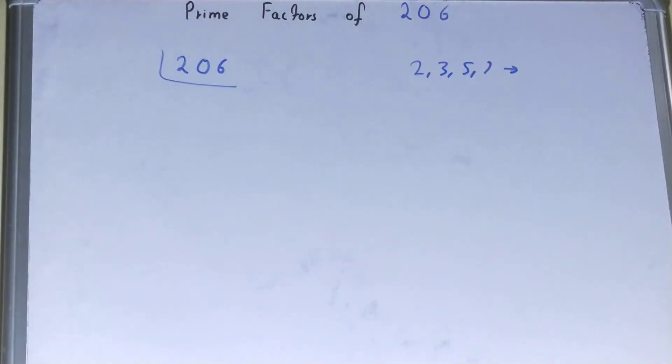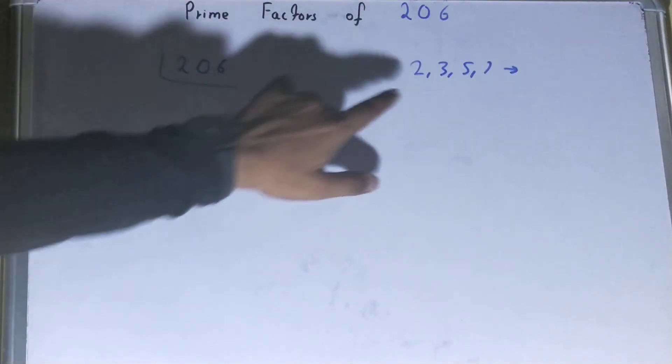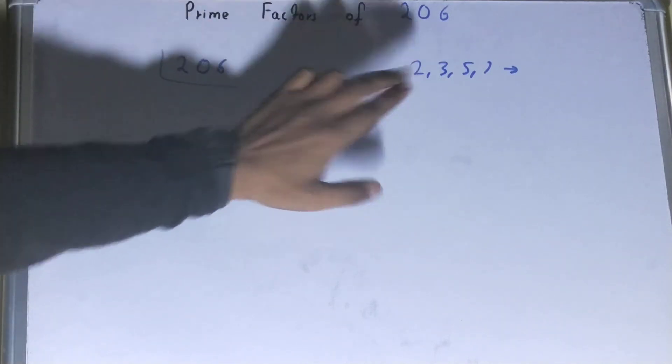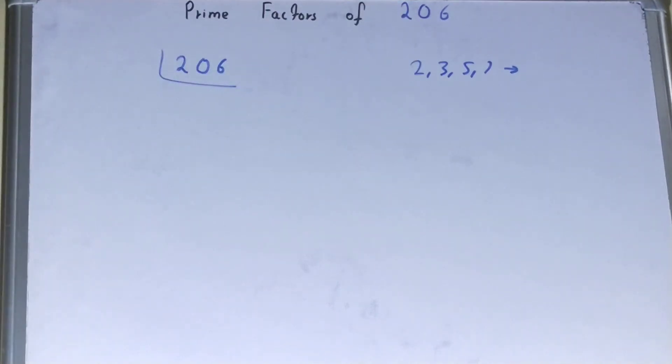So what we'll do, we'll start with the lowest prime number we have, that is two. Is this 206 divisible by the lowest prime number we have, that is two? Yes it is, because it is an even number.